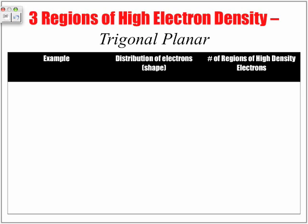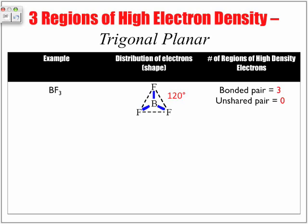Three regions of high electron densities will result in a trigonal planar state or shape. An example of this, BF3. Let's look at the distribution of the electrons, the shape. We have boron in the central atom, three surrounding fluoride atoms, and three bonded pairs. One, two, three. Notice how there are no unshared pairs.